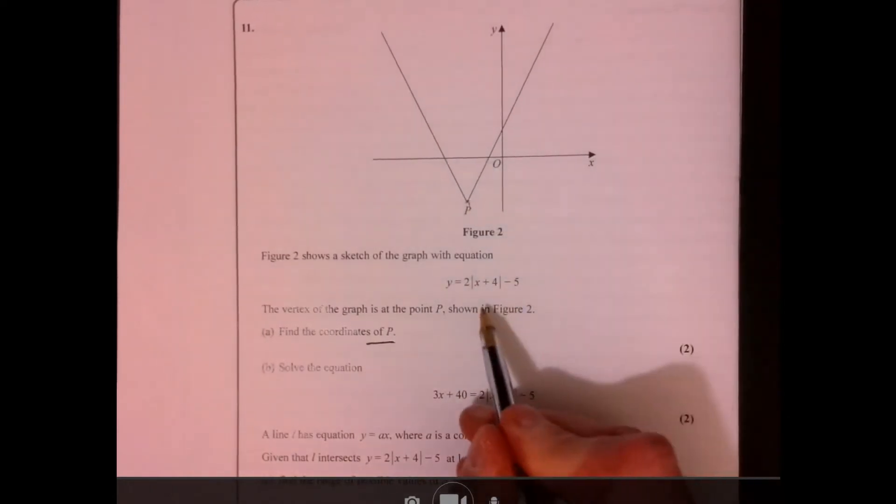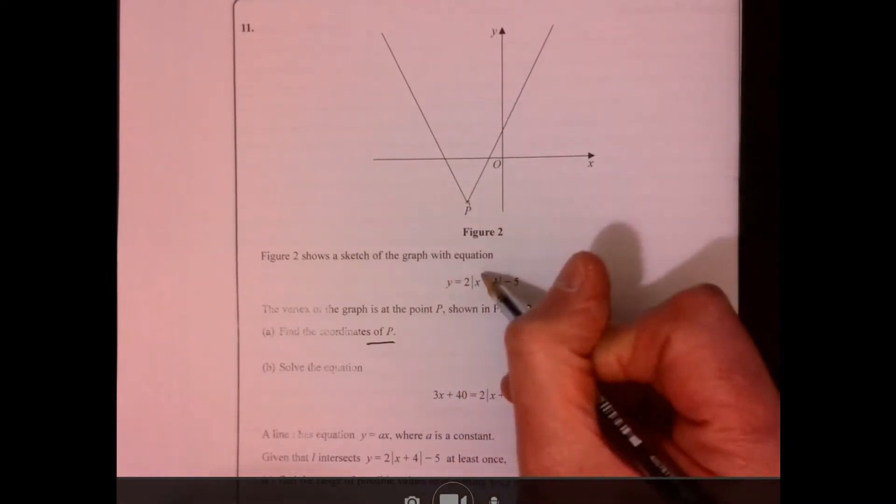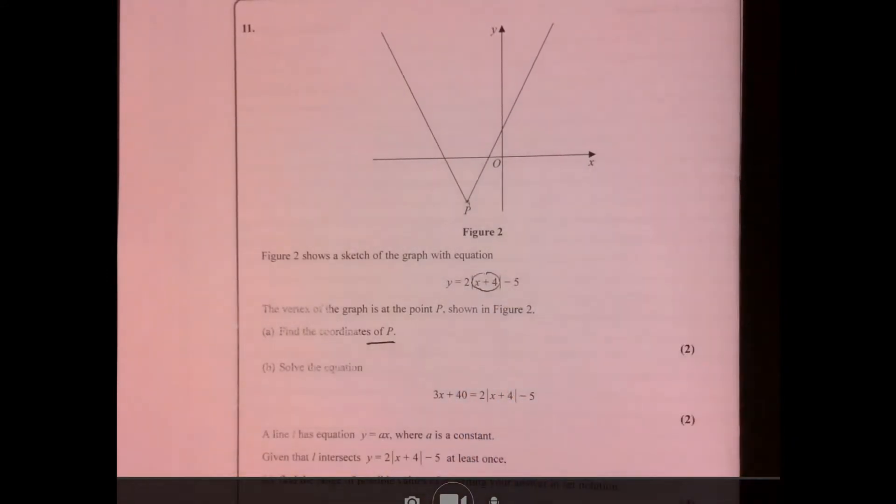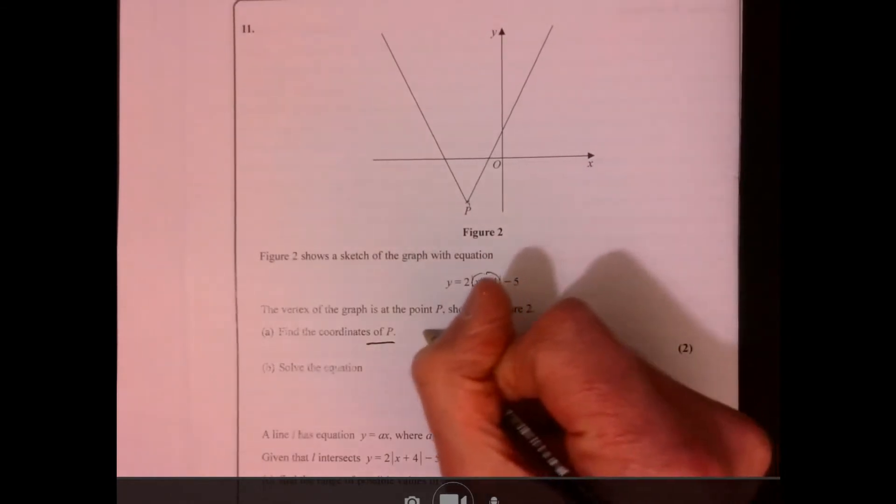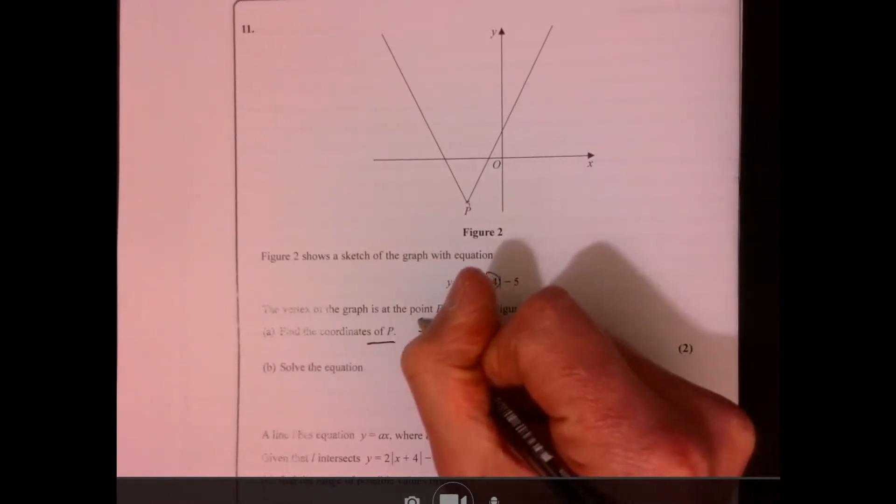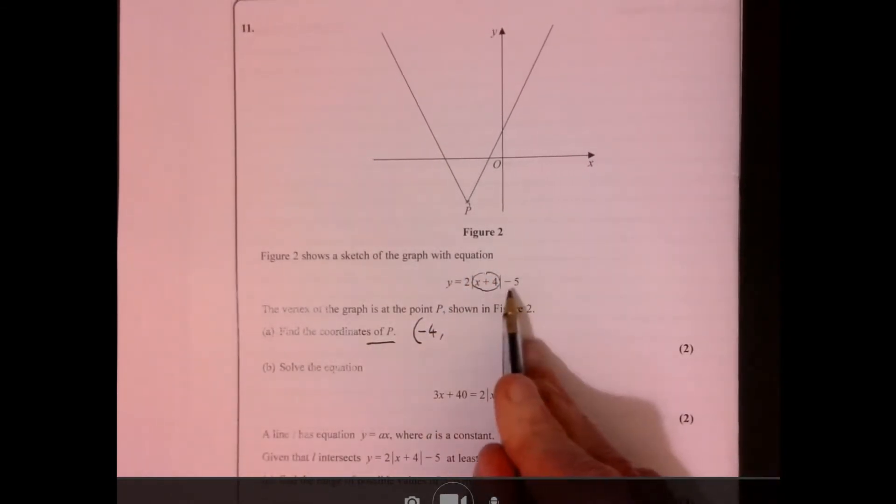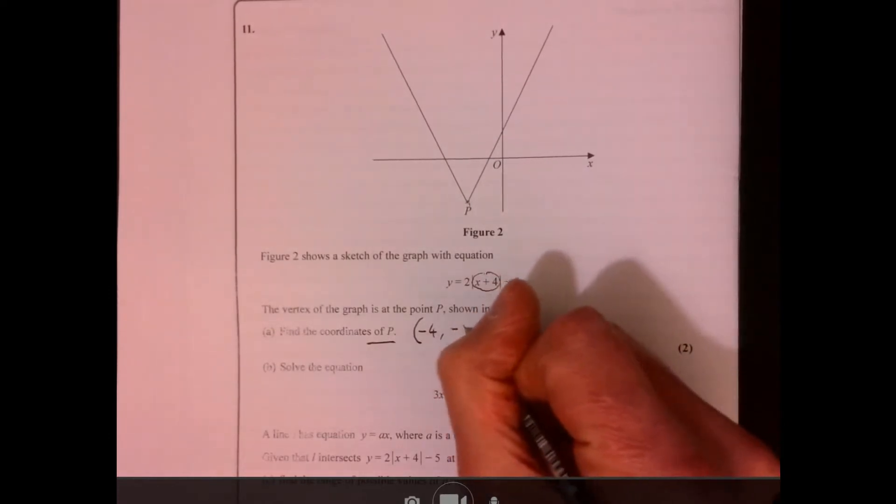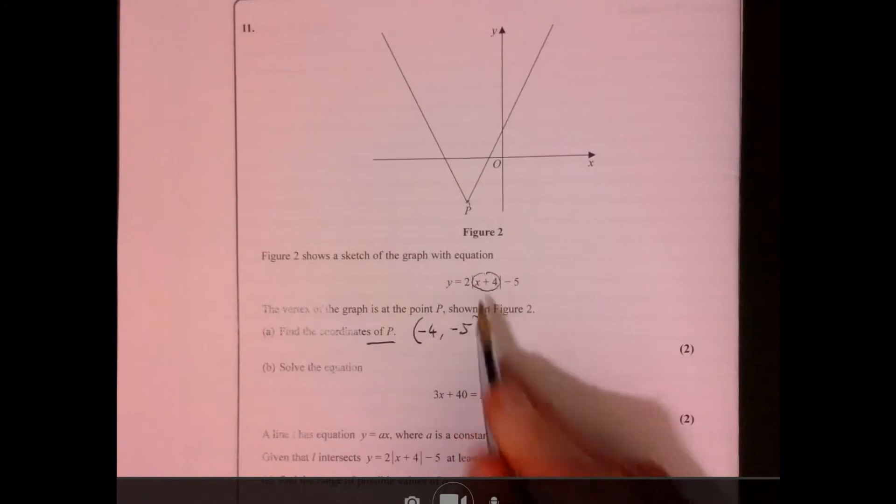So that's going to be when this part has to be 0. So the x value has to be minus 4, and then the answer would just be the y part would just be minus 5. So it's when that bit in there is going to be 0.